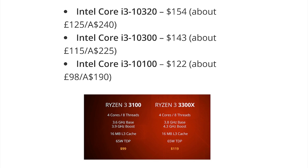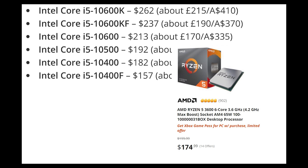Looking at price-to-performance, Intel's pricing is a little higher. The i3 models start at $122 and go to $154, whereas the competing Ryzen 3100 and 3300X are priced at $100 to $120 - so Intel i3 is already $20 to $50 more expensive. For i5 models, pricing ranges from $123 to $174, compared to Ryzen 5 at around $104 to $213 depending on variant.